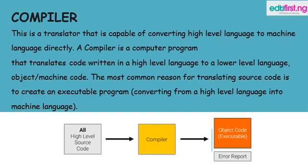The next type of translator is a compiler. A compiler is a translator that is capable of converting high-level language into machine language directly. A compiler is a computer program that translates code written in high-level language to a lower-level language. The most common reason for translating source code is to create an executable program, converting from a high-level language into machine language.